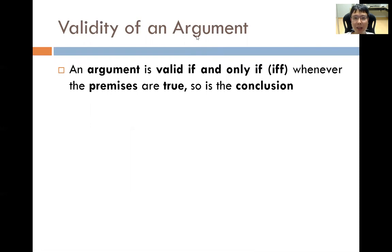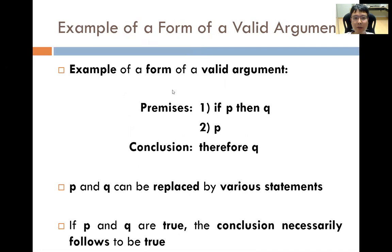Validity of an argument. Logic is applied to arguments mainly, and we would like to define when an argument is valid. An argument is valid if and only if, whenever the premises are true, so is the conclusion. As an example of a valid argument form: Premise 1 is 'if P then Q', Premise 2 is 'P', and therefore you conclude that Q must be true.